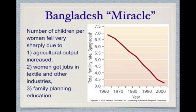Here's the Bangladesh miracle, which happened in just 40 years. The total fertility rate — the number of children a woman has in her lifetime on average — fell from almost seven children per woman to just over three in 40 years.